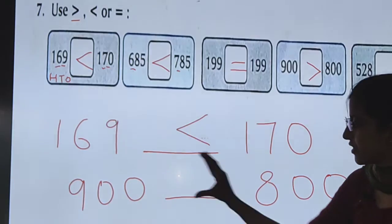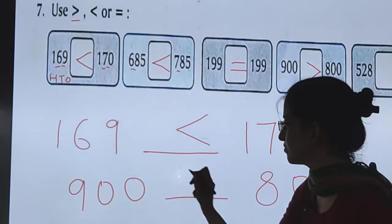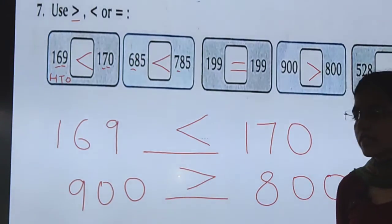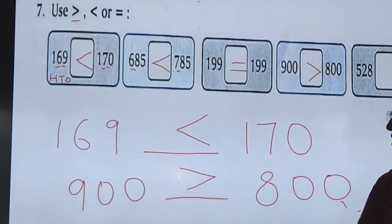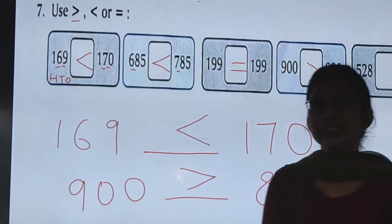Like this. So, here the greater sign will come. 900 is greater than 800. 169 is less than 170.